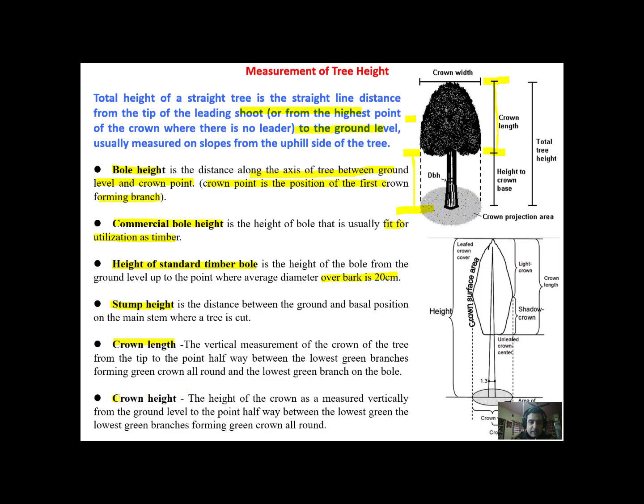Now we have crown height. It's the height at which the crown is placed. That is the height of the crown as is measured vertically from the ground level to the point halfway between the lowest green branches forming the crown all round. That is from the base of the tree to the middle of the two branches that forms lowest portion of the crown.